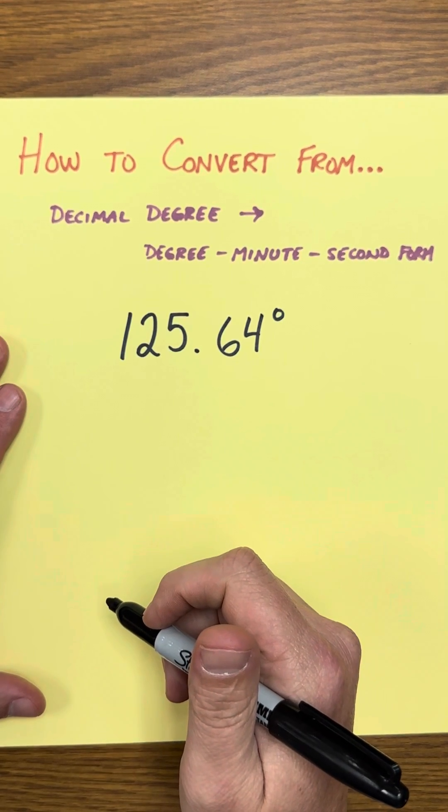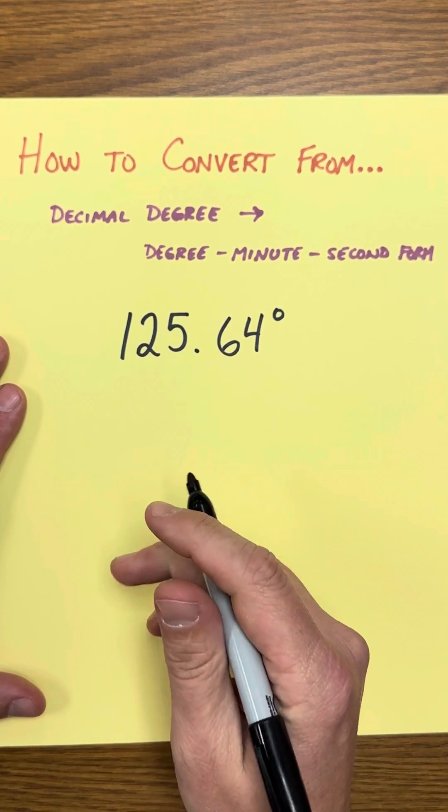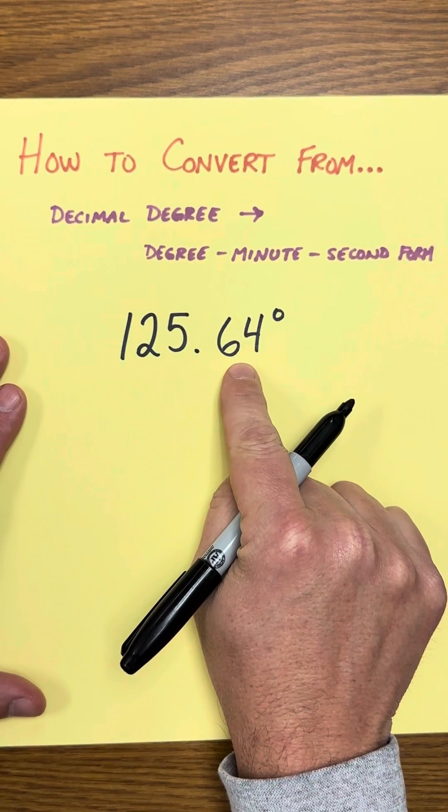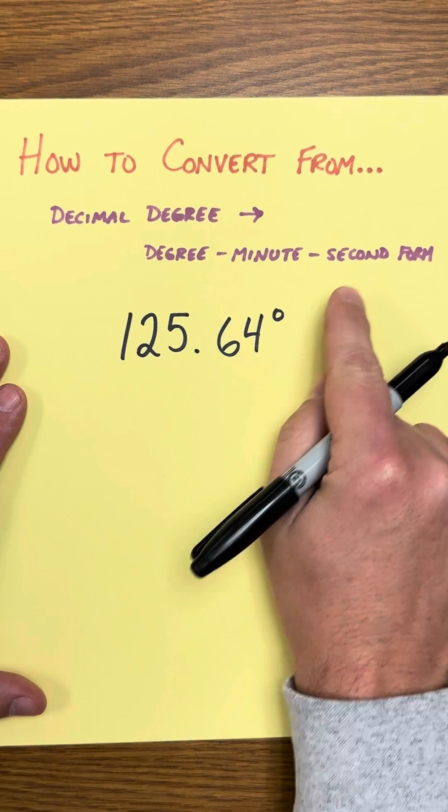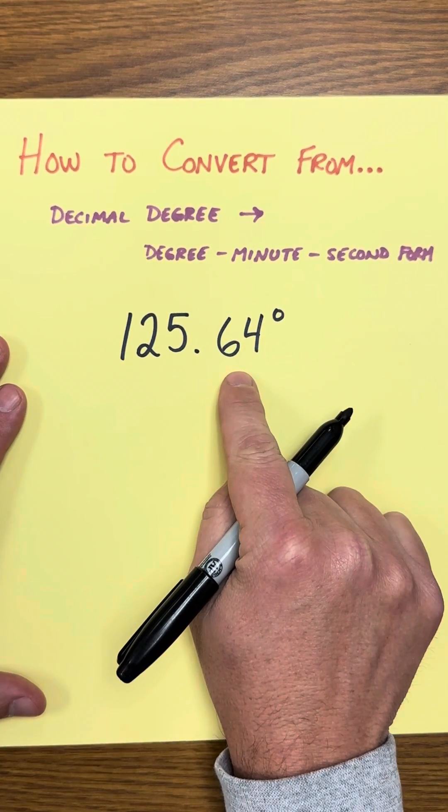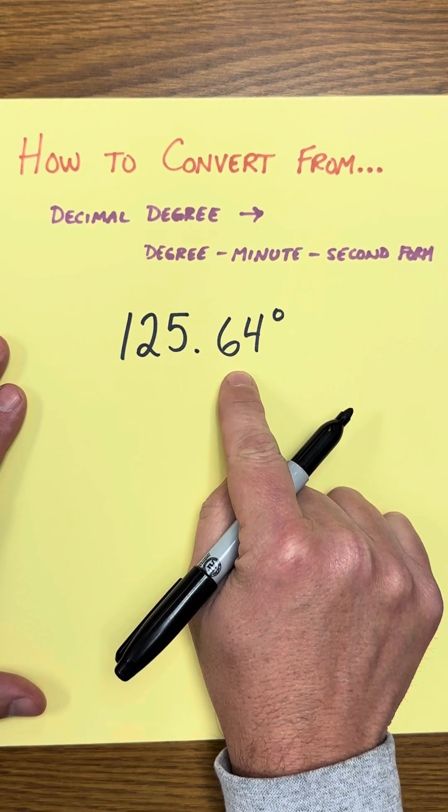In this video I want to show you how to convert an angle that is given to you as a decimal into degree minute second form. So here we have the angle 125.64 degrees.